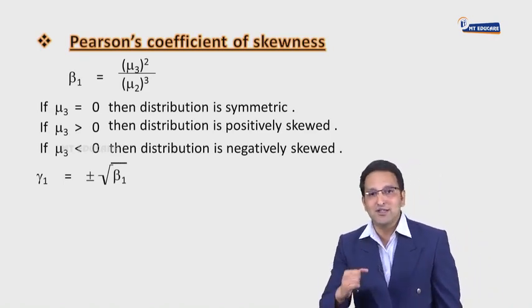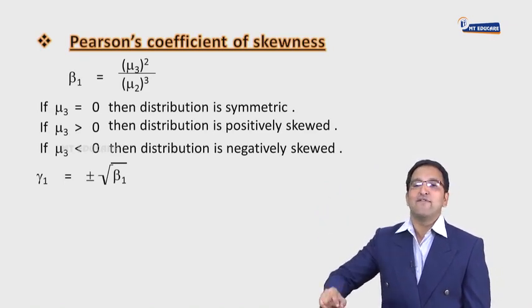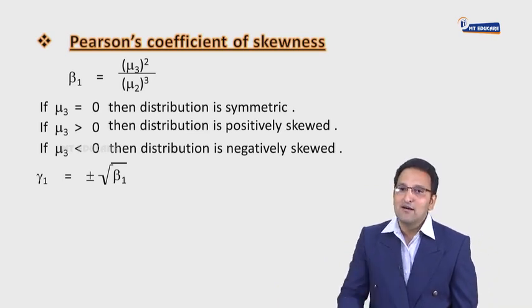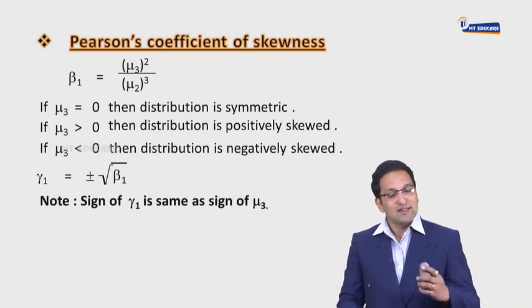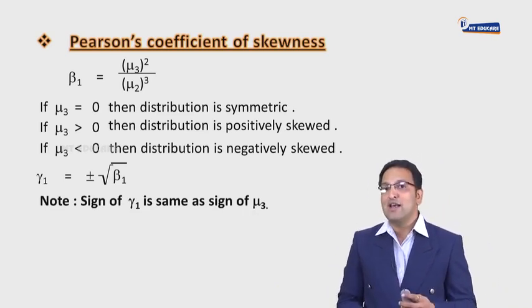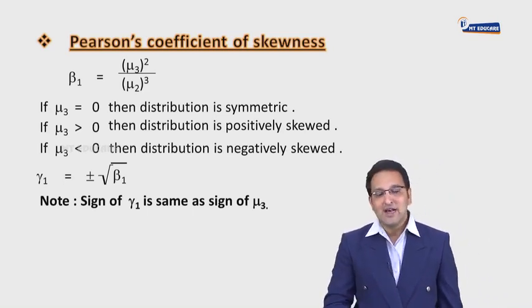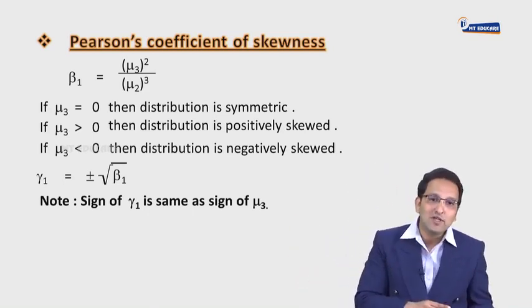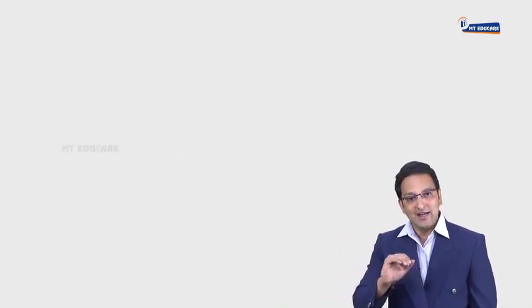Next concept is gamma1. Gamma1 ka formula hai: ±√(beta1). After calculating beta1, you calculate gamma1 using: gamma1 = ±√(beta1). Note: the sign of gamma1 is the same as the sign of Mu3. If Mu3 is positive, then gamma1 is positive. If Mu3 is negative, then gamma1 will be negative. So ye dono ka sign same hoga.